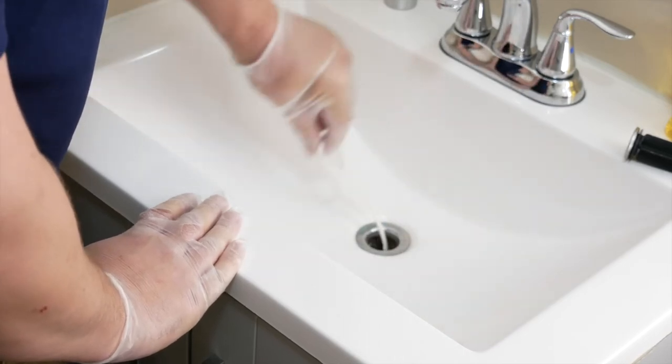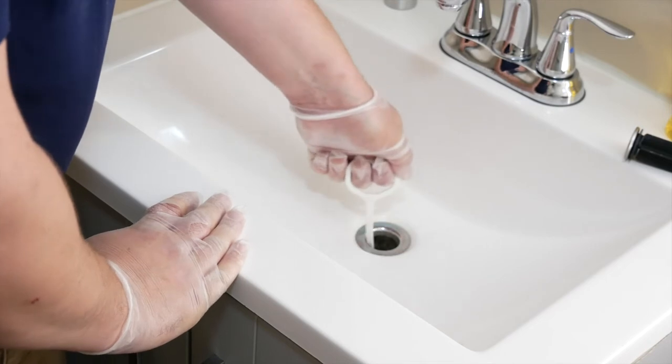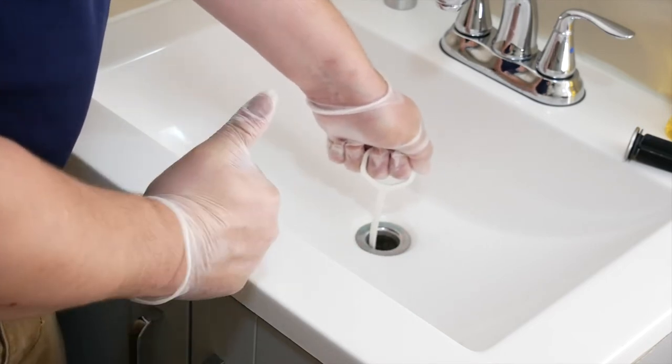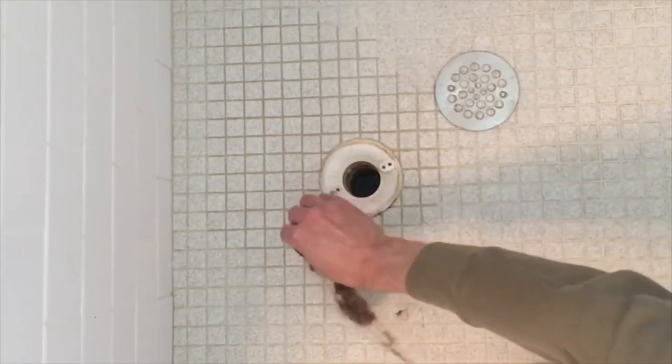Next, start to pull the tool back out slowly. If you feel resistance that means you've trapped a big old chunk of nasty. Tug as much as you need until the tool is out of the drain. Remove the remnants of the clog from the teeth and dispose of them in a plastic bag.